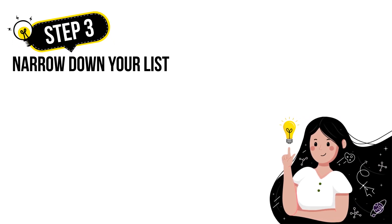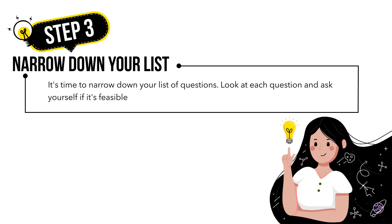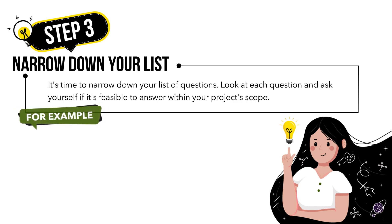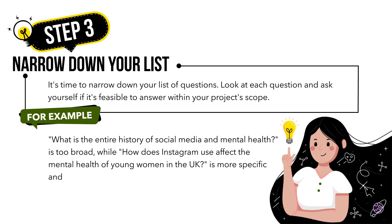After brainstorming, it's time to narrow down your list of questions. Look at each question and ask yourself if it's feasible to answer within your project scope. For example, 'What is the entire history of social media and mental health?' is too broad. While 'How does Instagram use affect the mental health of young women in the UK?' is more specific and feasible to answer.